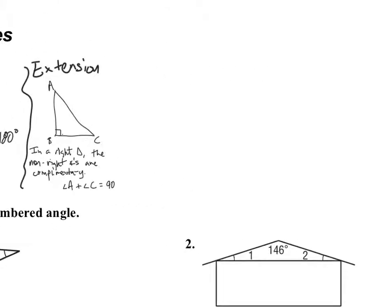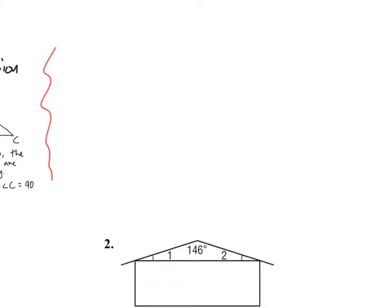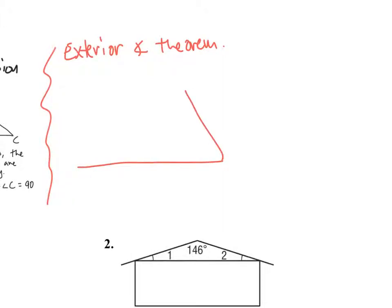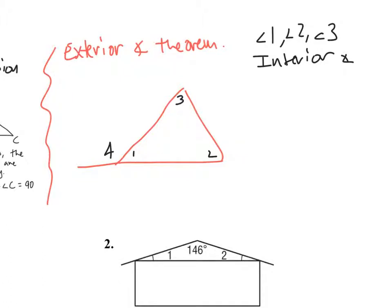There's another theorem we can use called the Exterior Angle Theorem. I'm going to draw a triangle with one side extending outward. I'll call the interior angles angle 1, angle 2, and angle 3, and the exterior angle will be angle 4. Angles 1, 2, and 3 are interior angles, and angle 4 is the exterior angle.